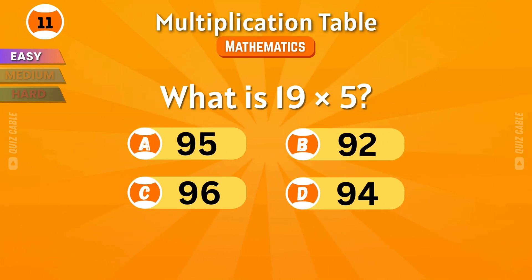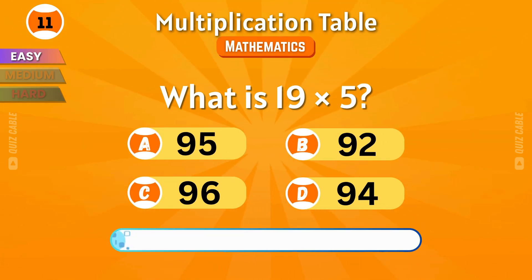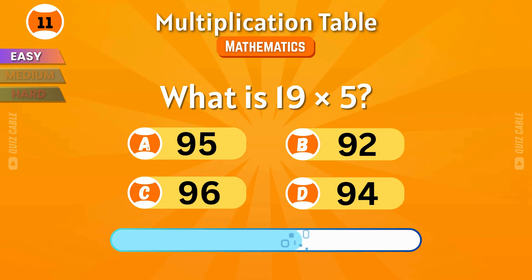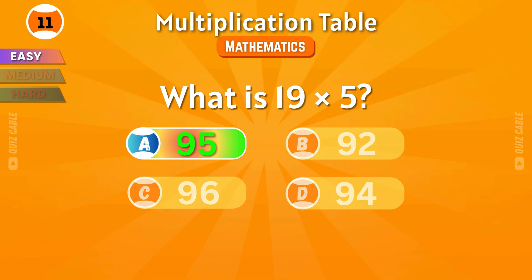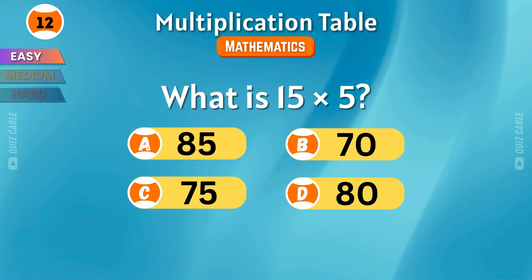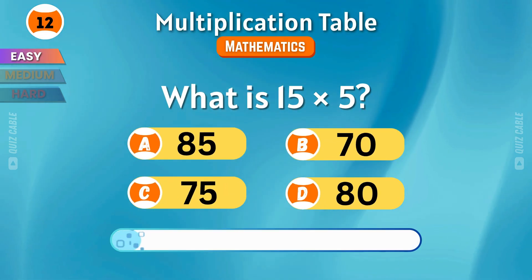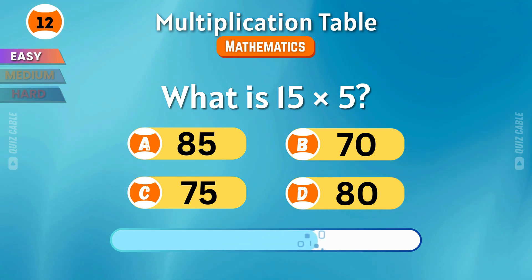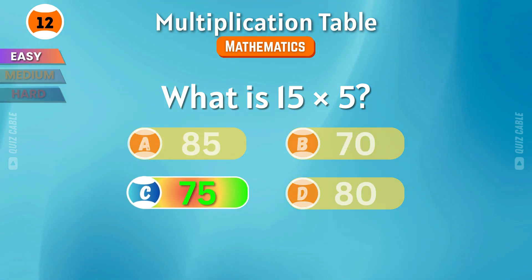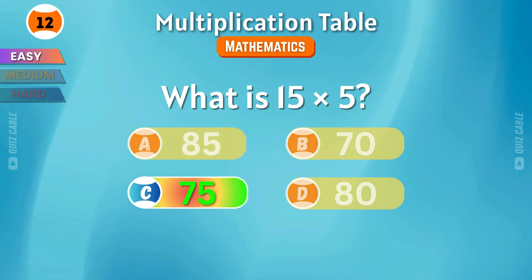What is 19 times 5? That's 95! What is 15 times 5? Yes — 75 again!